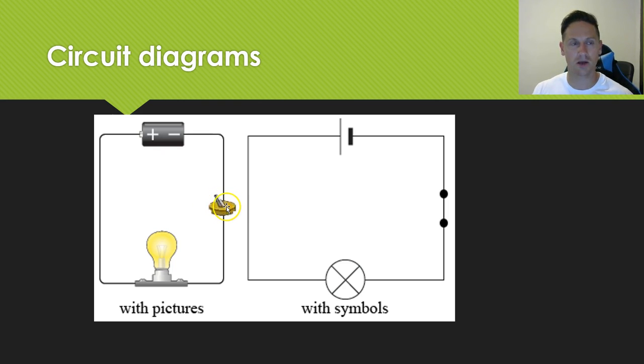If the switch is closed, so that would be on, then the electrons will keep moving through. If the circuit is open, which would be off, then the circuit is broken and no electricity will flow through at all. So that's open versus closed circuits.